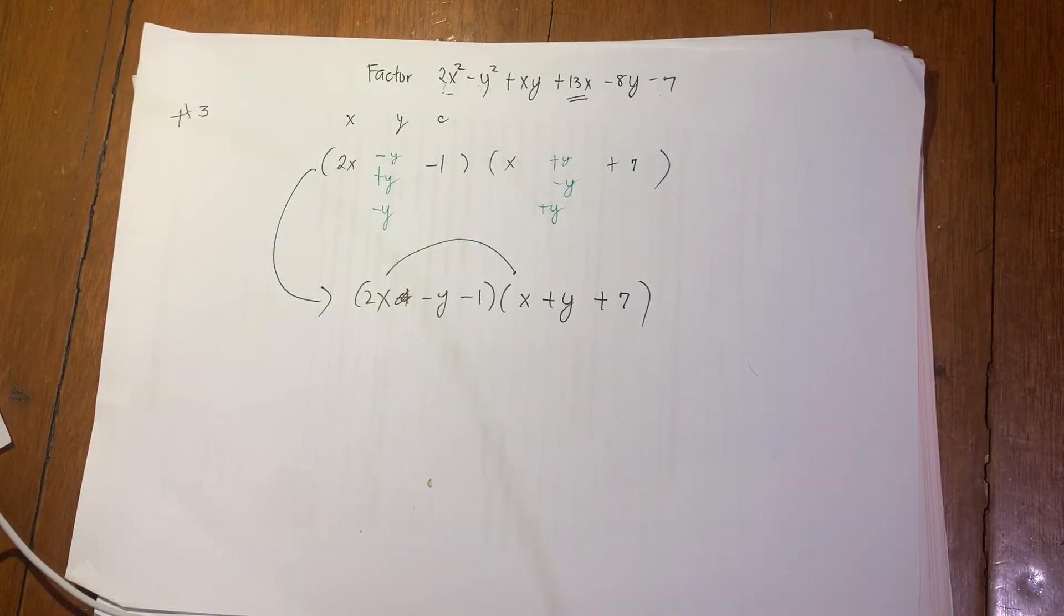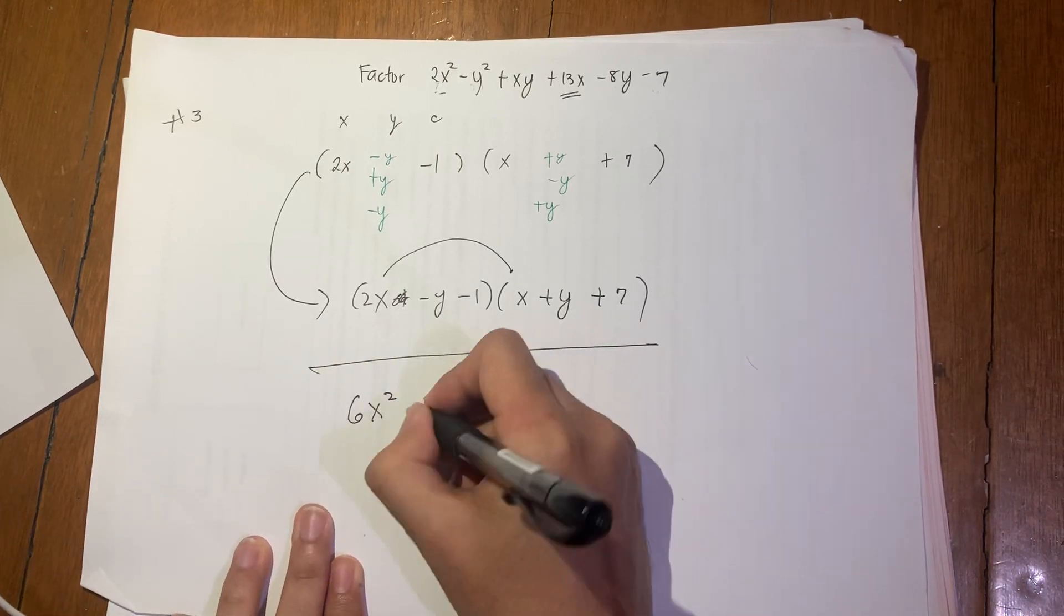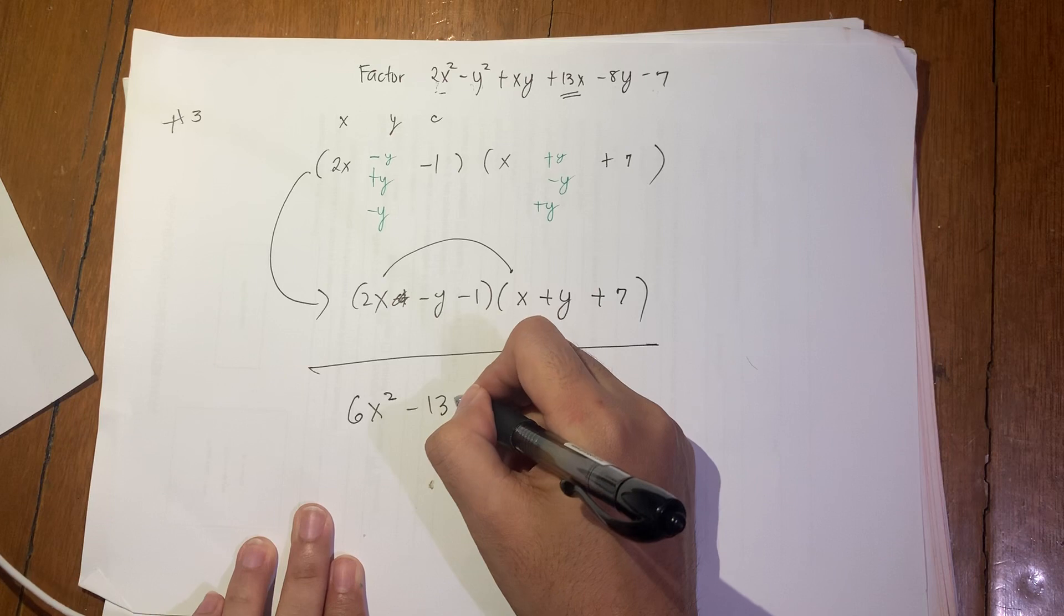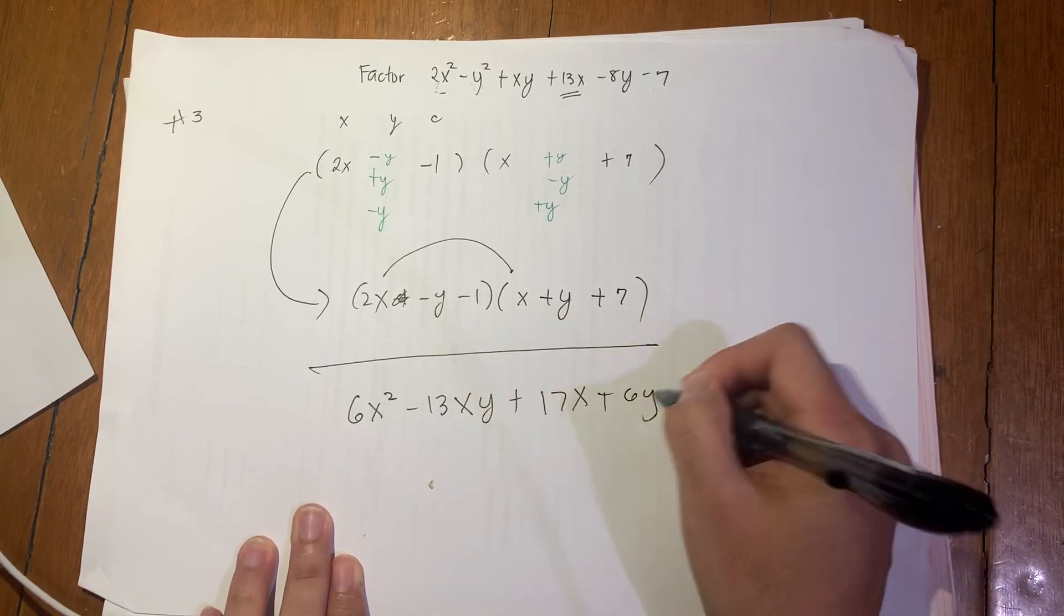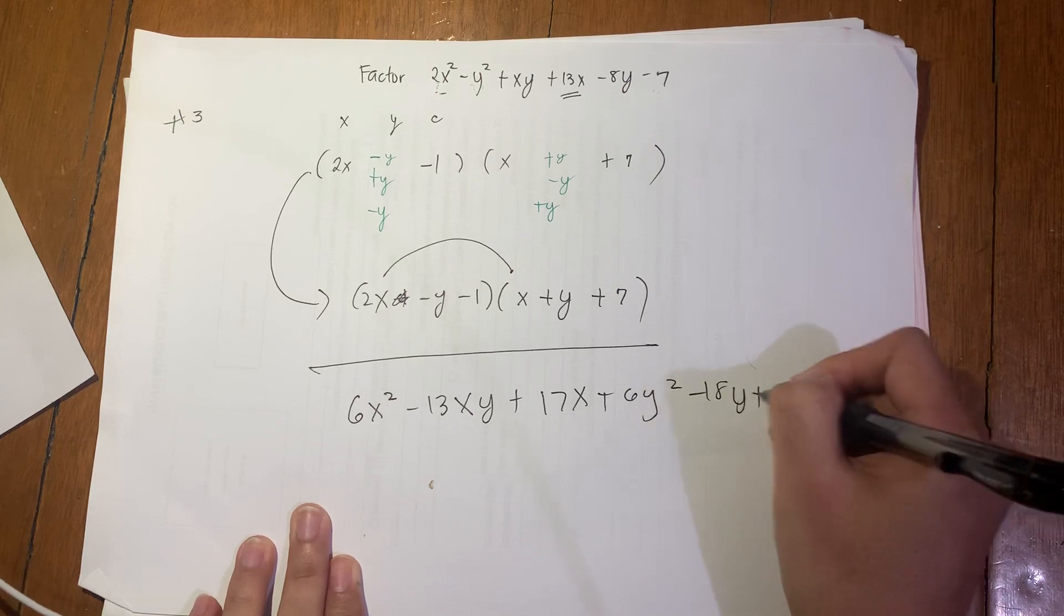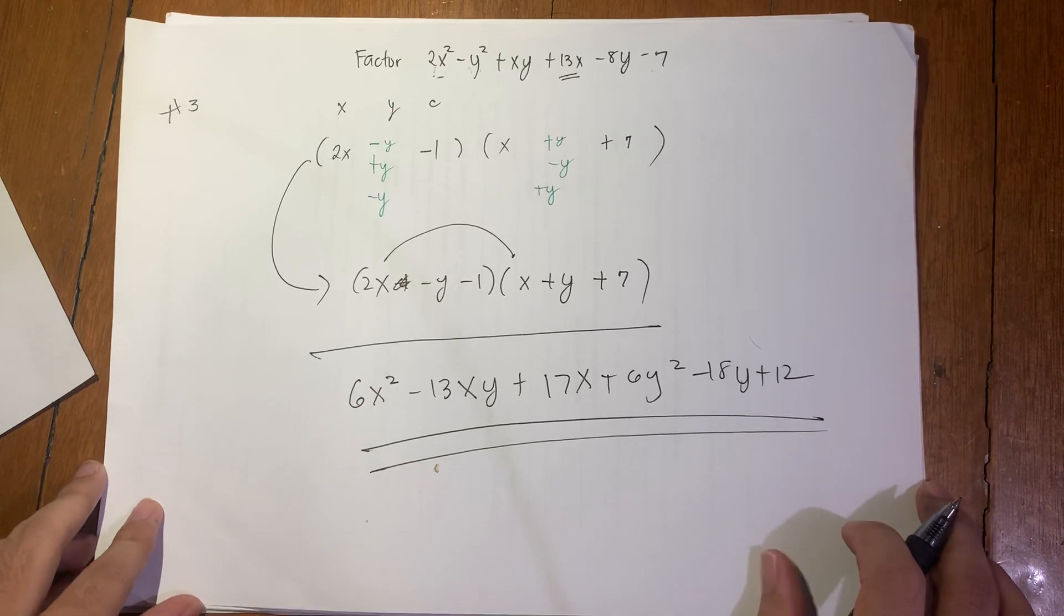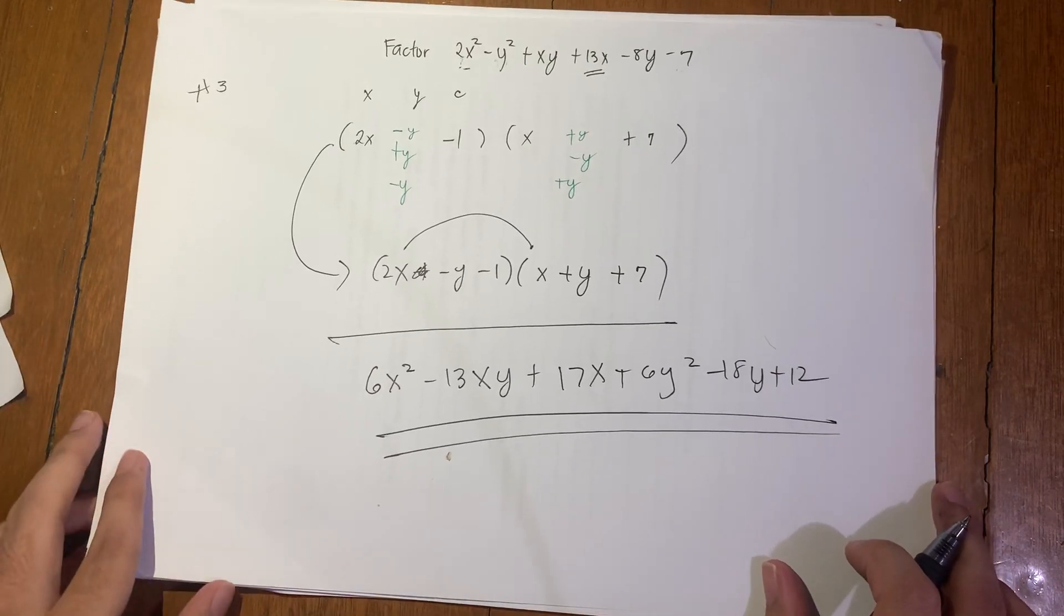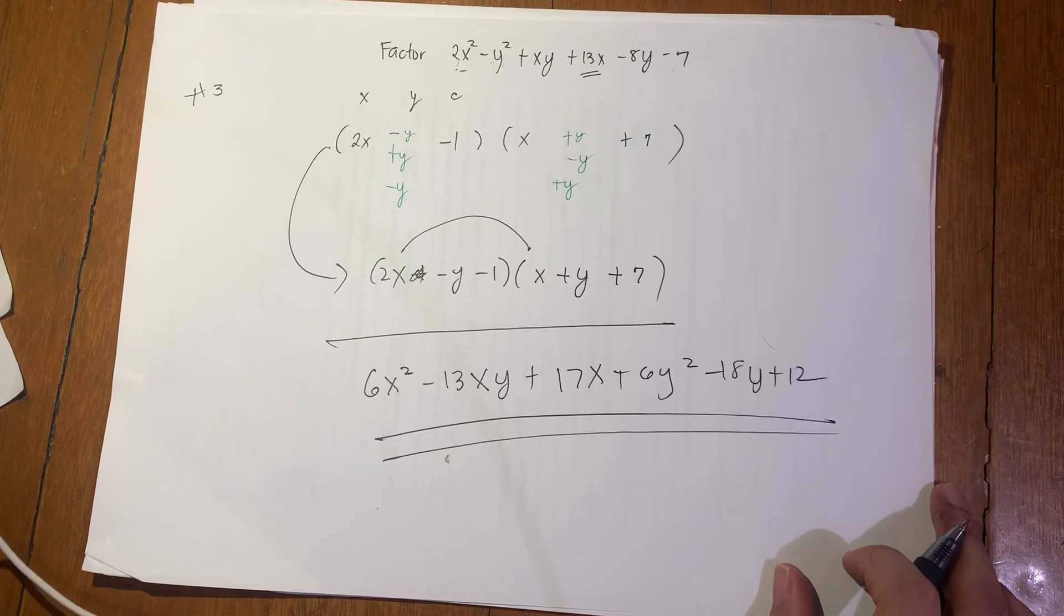Okay, so I hope you learned something from this video. And as an exercise, I want you to solve this: I want you to factor out this expression: 6x squared minus 13xy plus 17x plus 6y squared minus 18y plus 12. If you are able to factor this, let me know in the comment section below. And that's it for this video. Thank you for watching, don't forget to subscribe. Thank you, bye bye.